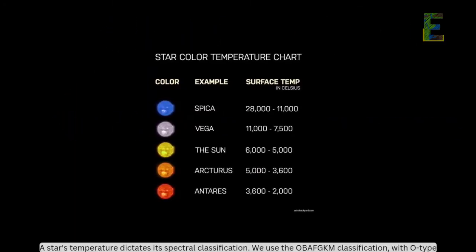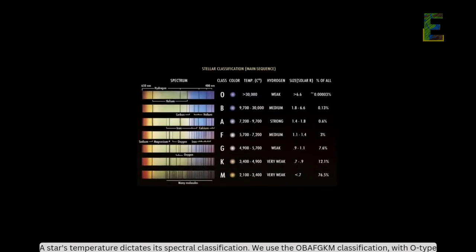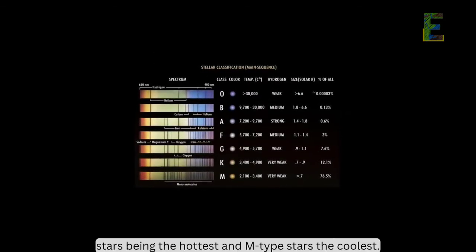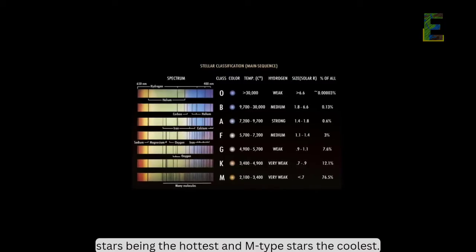Stellar temperatures: A star's temperature dictates its spectral classification. We use the OBAFGKM classification, with O-type stars being the hottest and M-type stars the coolest.